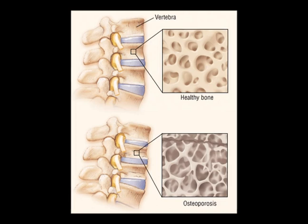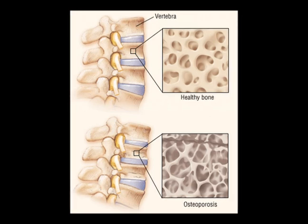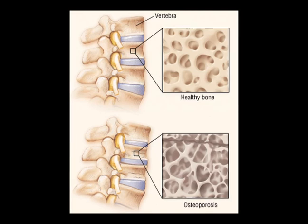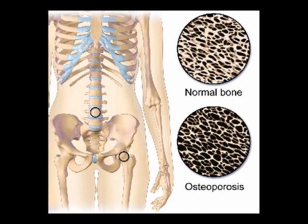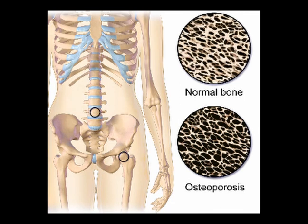Osteoporosis is defined as low bone mineral density caused by altered bone microstructure, ultimately predisposing patients to low impact fragility fractures. Osteopenia is often confused or sometimes used together with osteoporosis, but osteopenia is lower than normal bone mineral density below the normal reference values, but not low enough to meet the diagnostic criteria of osteoporosis.